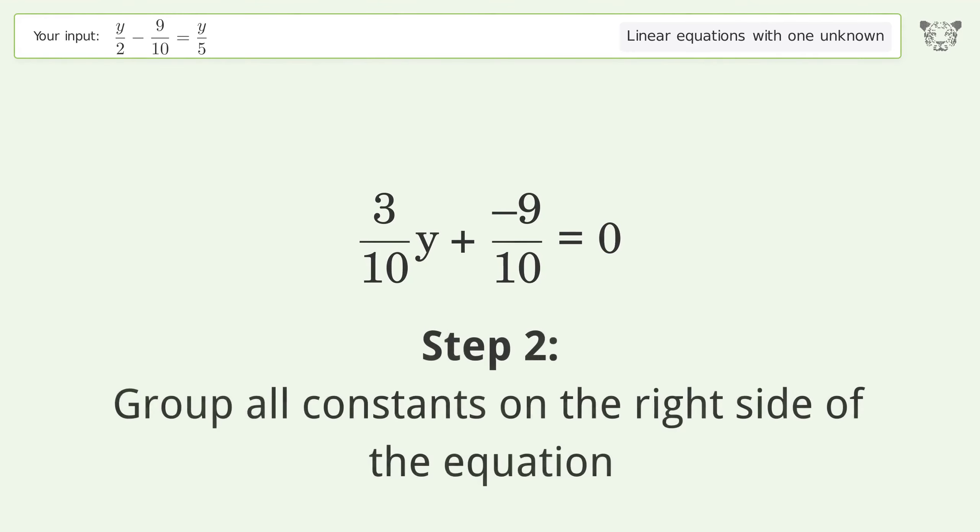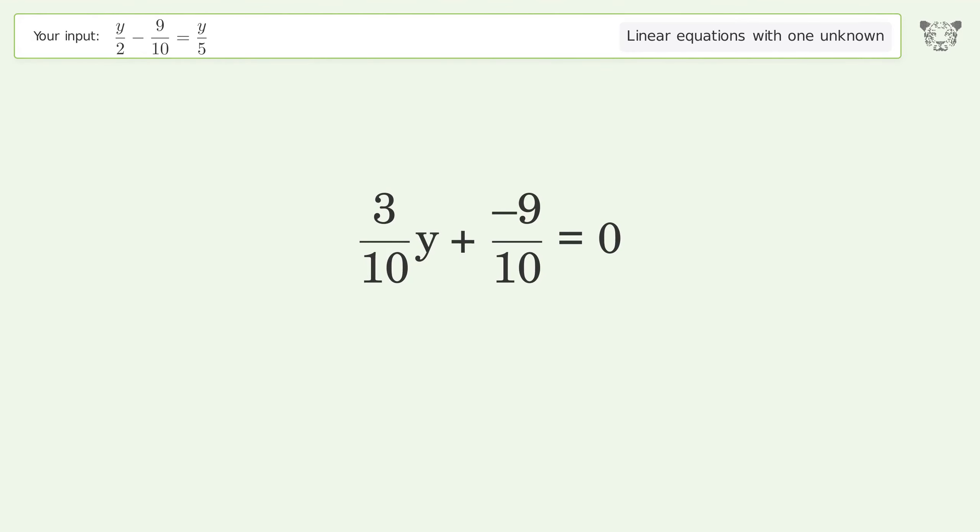Group all constants on the right side of the equation. Add 9 over 10 to both sides.